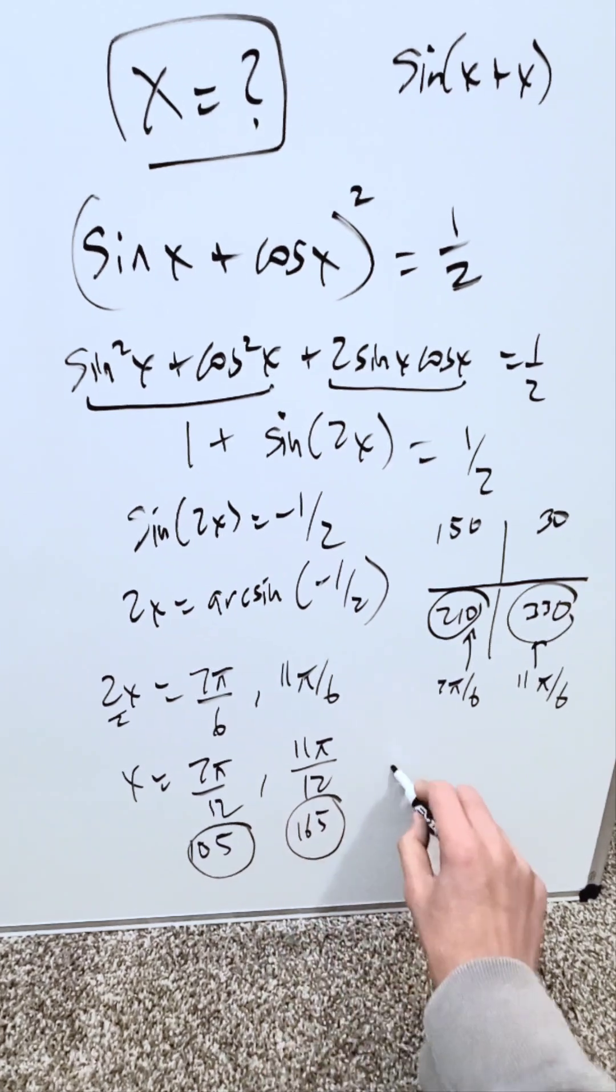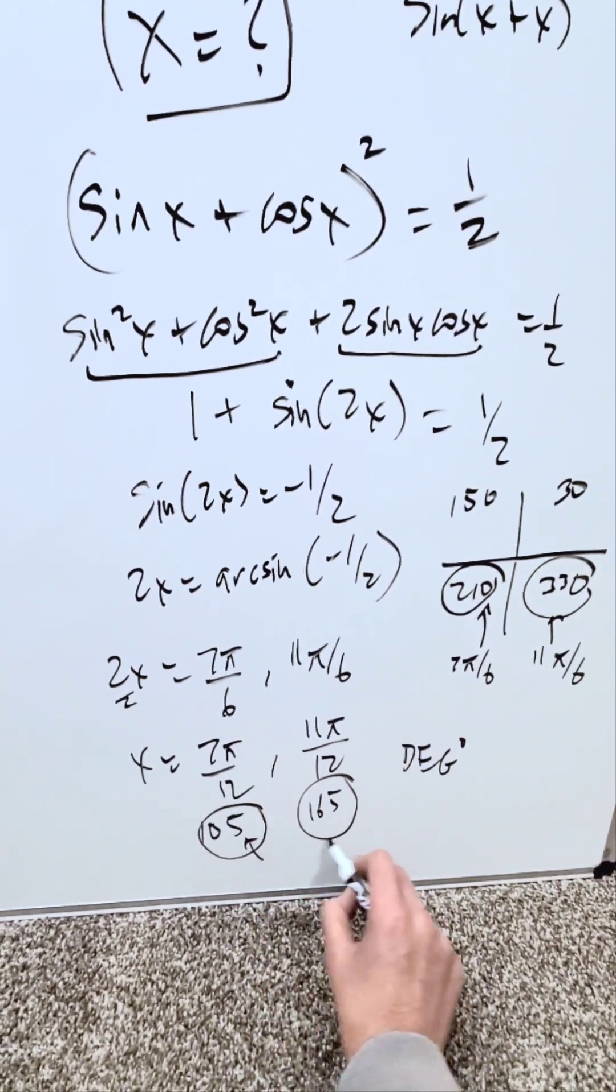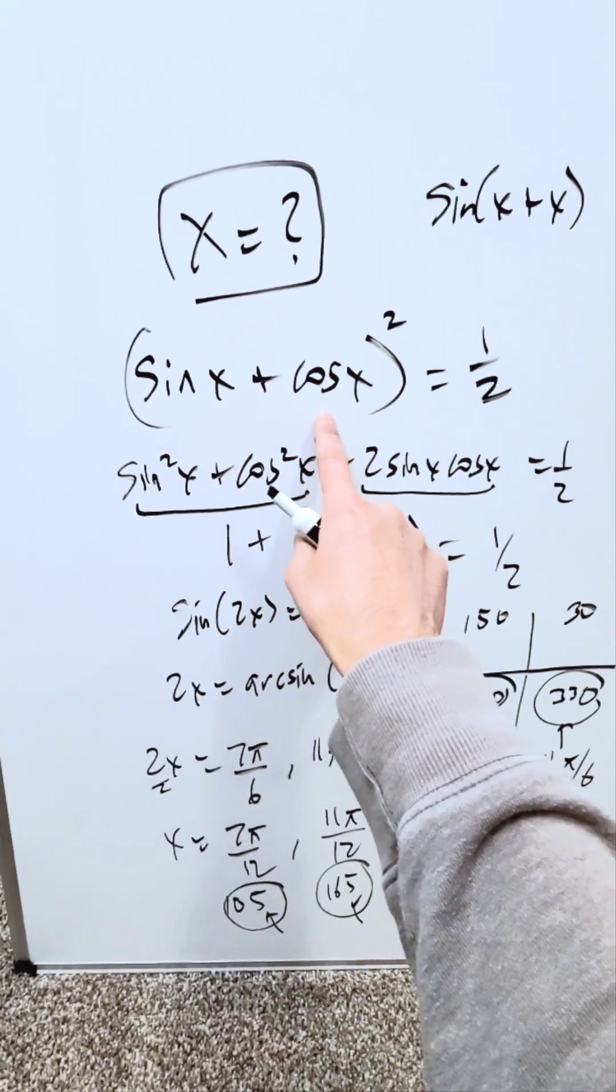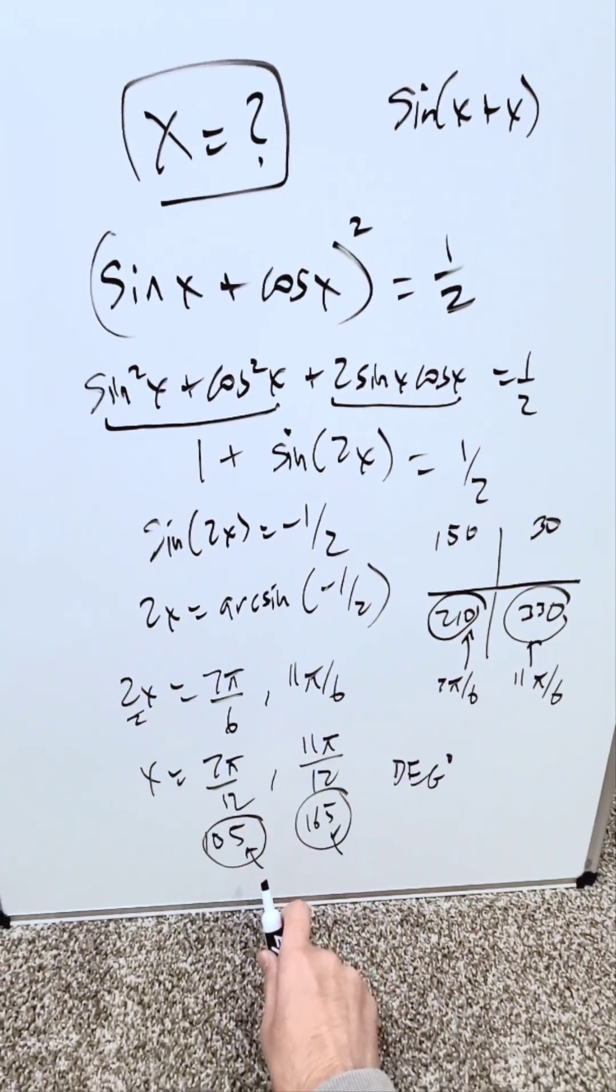Represent these on your calculator in DEG mode if you want and run both of these items in this equation. When you square your result, it will be equal to 1 over 2. Both of these answers are good.